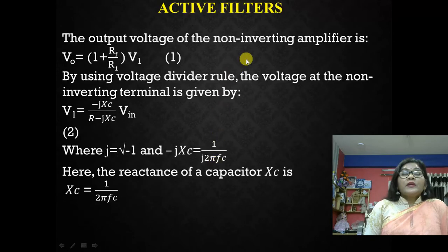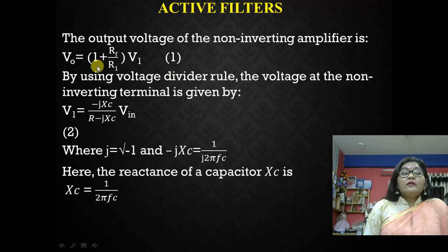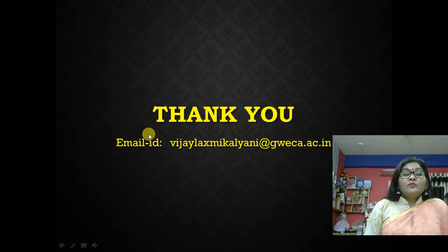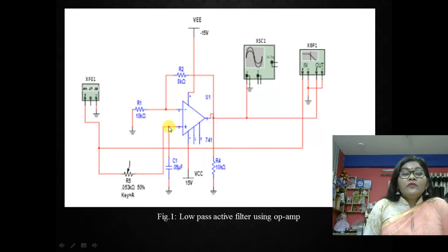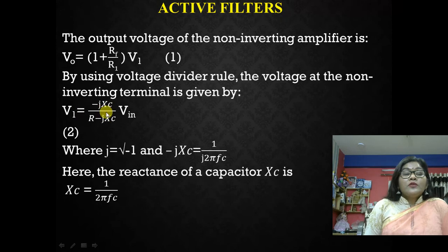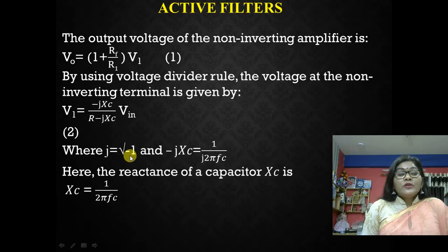Now for the derivation of the active filter: the output voltage of the non-inverting amplifier is V0 equals (1 plus RF over R1) times V1. This is because in the low pass filter circuit the op-amp is used in non-inverting mode, so the output equals (1 plus RF over R1) times V1. We will now find out the voltage at node V1.